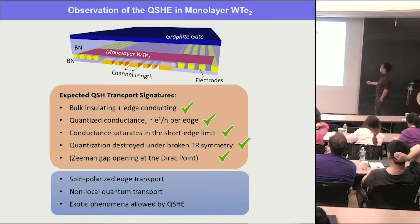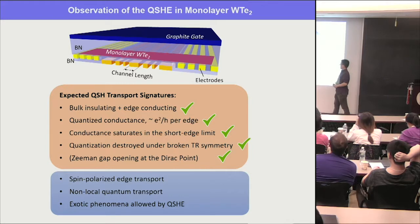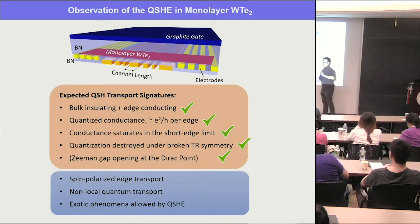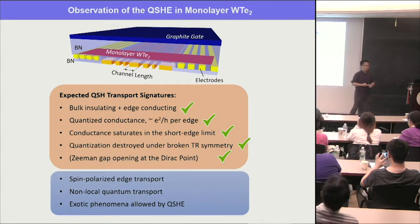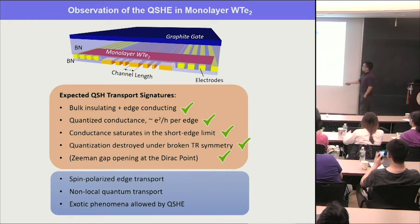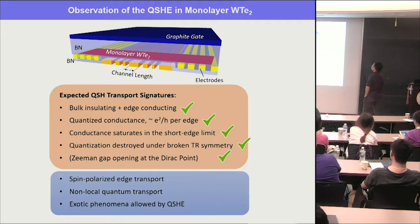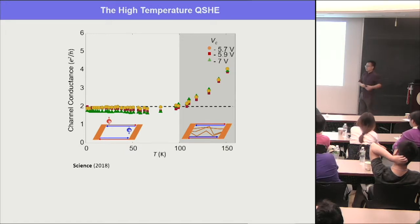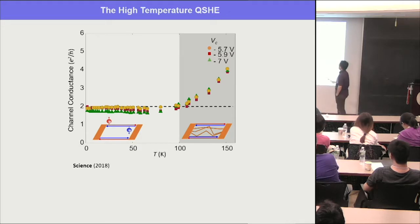At other gate voltages away from the Dirac point, moving the Fermi level away means the B field still breaks time-reversal symmetry but now without a nearby gap, so conductance decreases and then saturates — the expected behavior for a helical edge mode losing its protection. Combining all these criteria: bulk insulating, edge conducting, quantized conductance e²/h per edge, ballistic length dependence, and B-field response — we're quite confident monolayer tungsten ditelluride is a quantum spin Hall insulator.